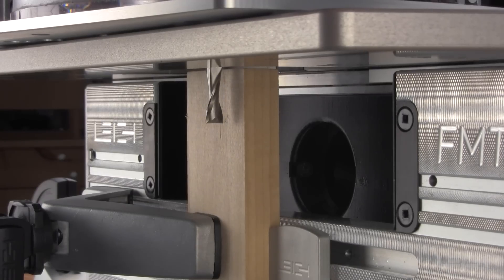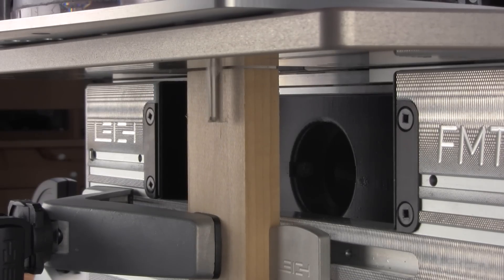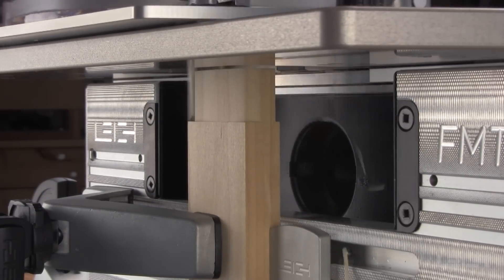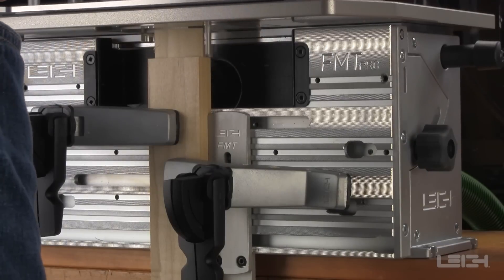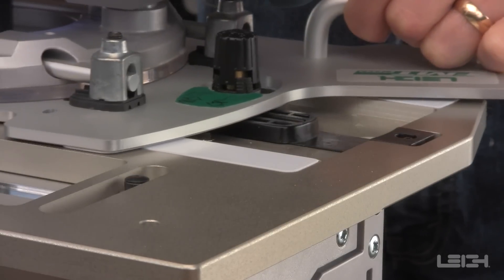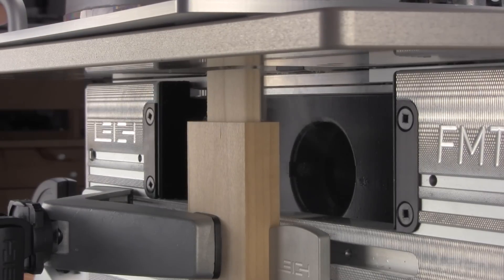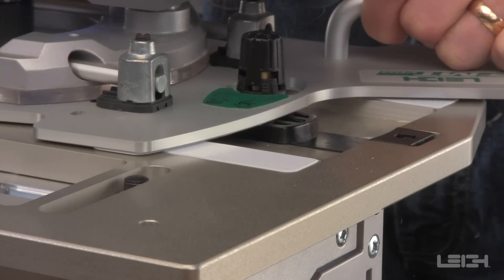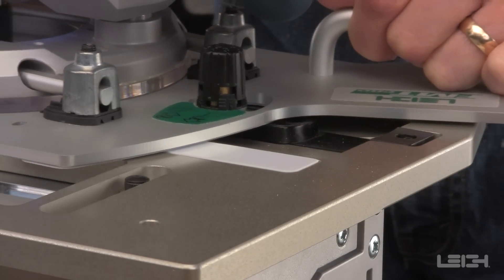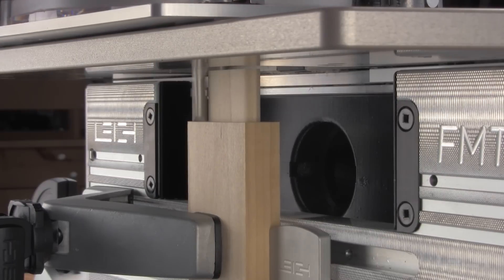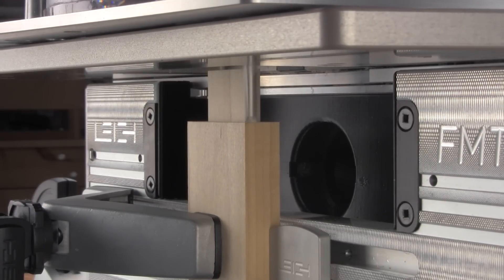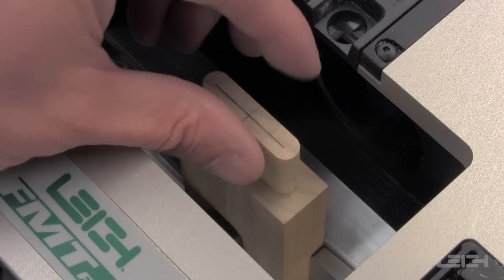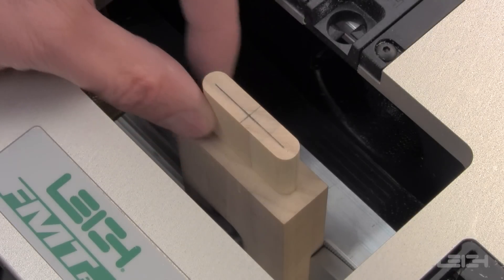Plunge the router and route the tenon. Start by climb routing clockwise. This provides a very clean shoulder cut. Then route counterclockwise running the guide pin against the guide to clean up the tenon. The result is a perfectly smooth cut.